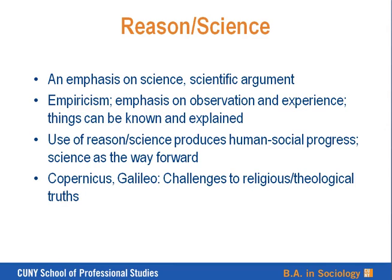There is an enormous emphasis on science and the scientific argument as part of the emergence of sociology in the late 18th century, and on empiricism — actually a Greek term — which emphasizes observation and what comes from experiential knowledge, that is, information gathered through the senses: things that can be known and explained as opposed to things that cannot be proven or corroborated with data. A high emphasis on the use of reason and science in this context produced human social progress, both as part of the Industrial Revolution and as science as the way forward.